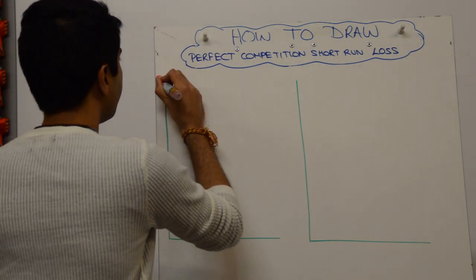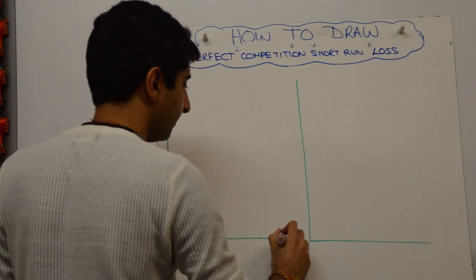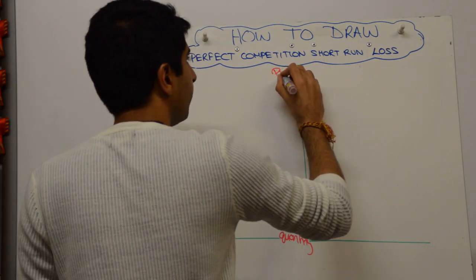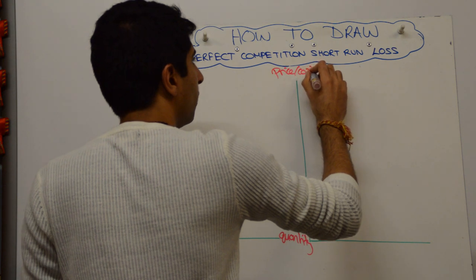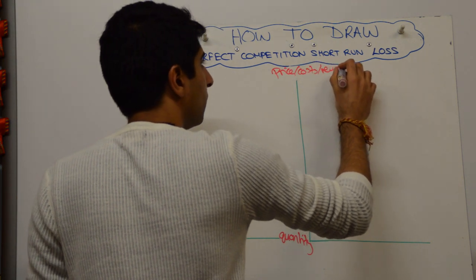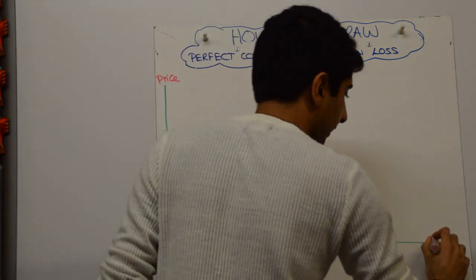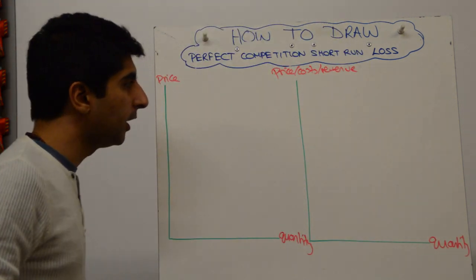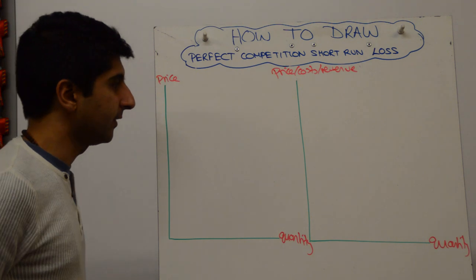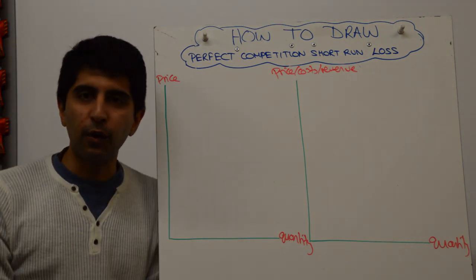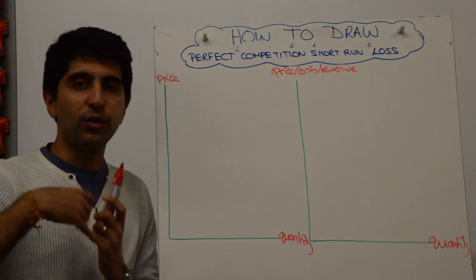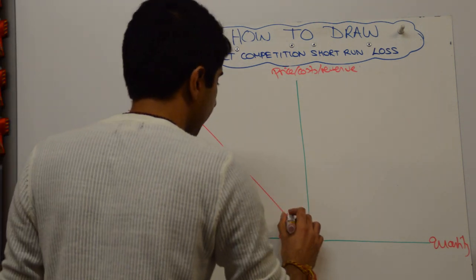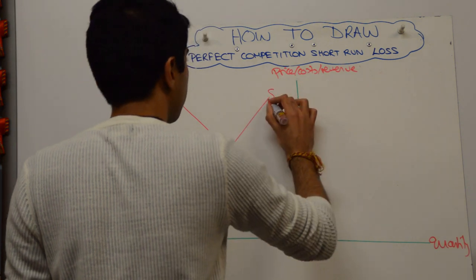So we have the market on the left, so price and quantity on the axis here. And we have the firm on the right, so we're going to have price, costs and revenue, and quantity. Important that you can put all three at the top. Start there, label the axis. As I said in my previous video, go slowly, don't rush too far ahead. Do the basics, take your time. Let's get your market right, so you need demand, supply, and equilibrium price and quantity.